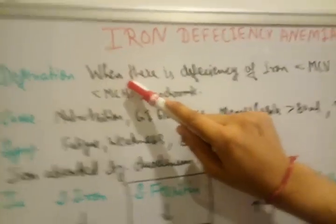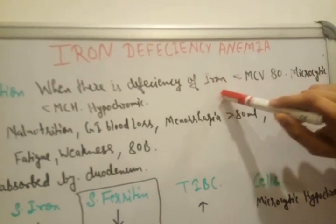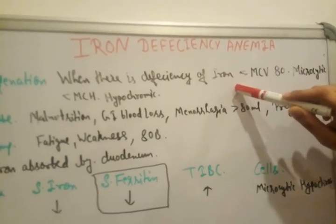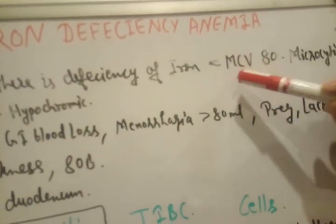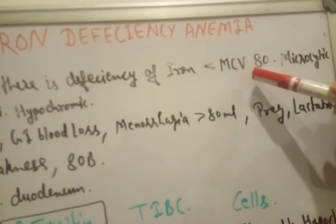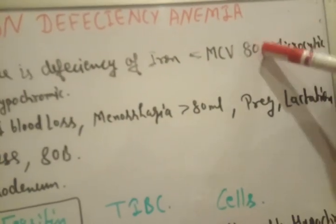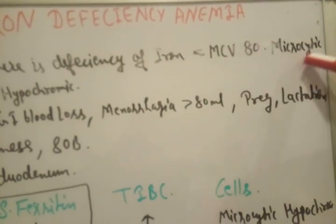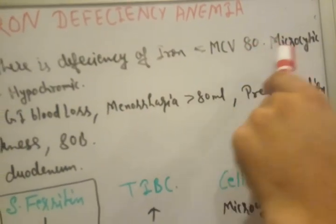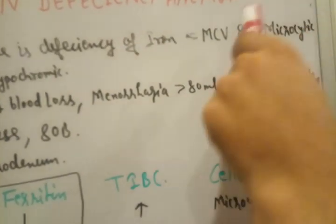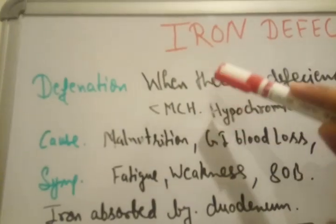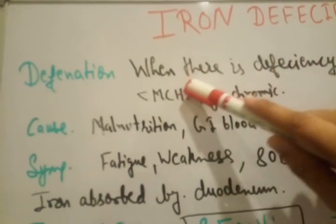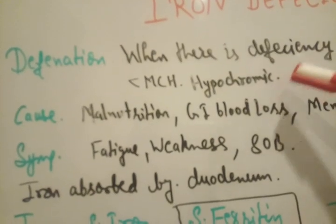Definition includes when there is deficiency of iron, what happens is decrease in MCV, mean corpuscular volume, it is less than 80. That's why the cells are less, it's known as microcytic, micro means small cells. And MCH is low, mean corpuscular hemoglobin, its value going to be down, so hypochromic, the color is less.